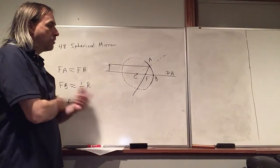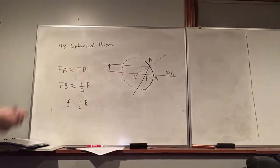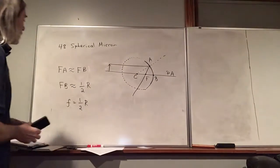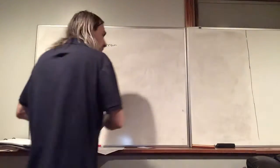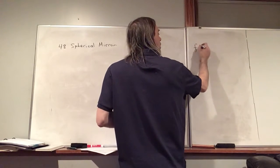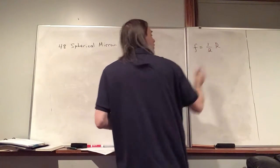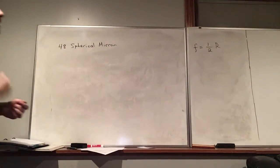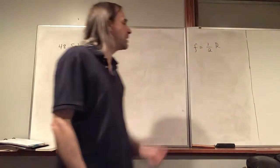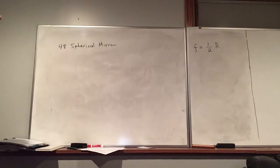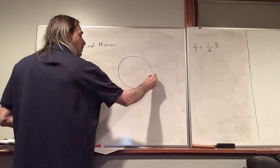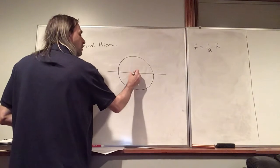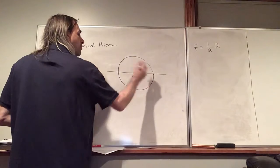Okay, now that raises the question: what kind of image are we going to get from a mirror like this? Let me redraw this. So right now what we've established is that the focal length is one half R — one half the radius of curvature. Now if you look in the equation sheet, you'll see this except there's a plus or minus sign in front of that one half R. We'll talk about that later, so don't worry about it for now.